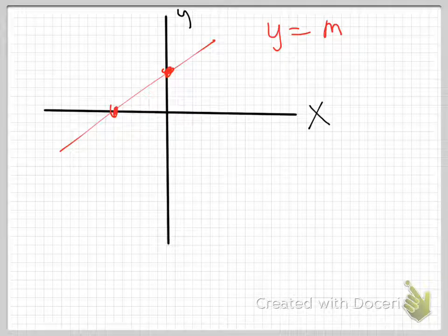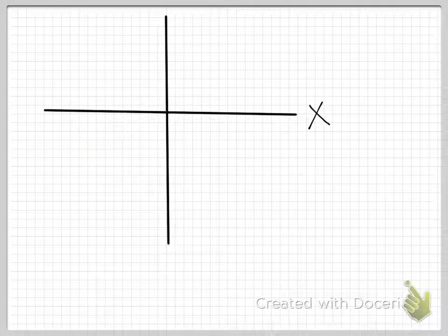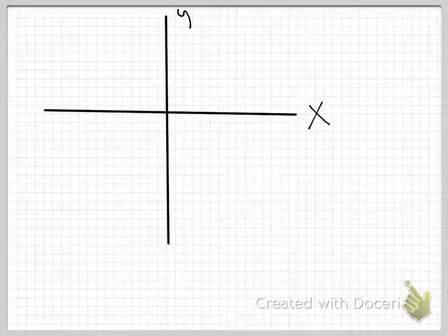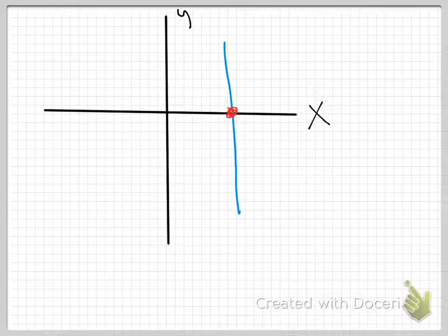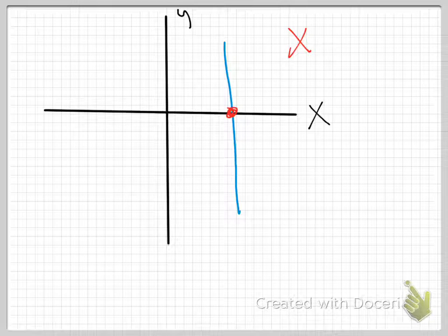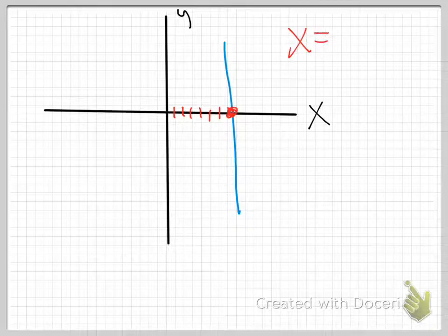If your line does not touch the x or y-axis — let's say you have a line that does this — what axis is it touching? It's only touching the x-axis. So you're only going to have an x in your equation. If we count over, let's say it's at seven, then we'd say x equals seven. Notice it's not touching the y-axis, so there's no y in our equation.